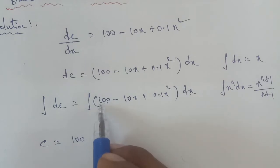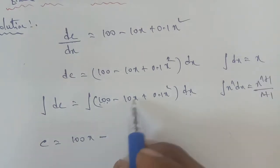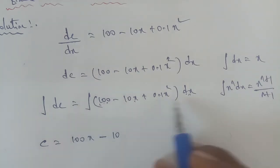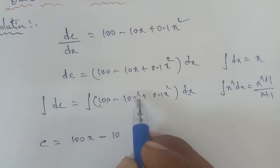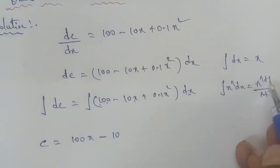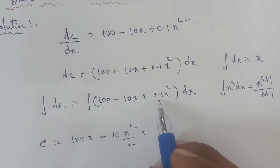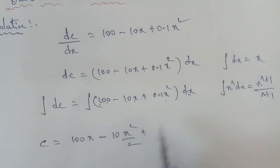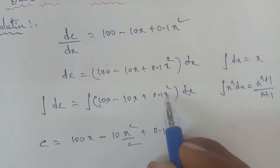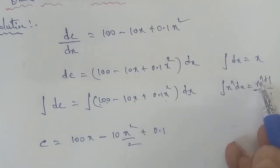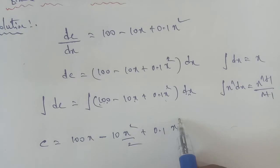The integral of 100 dx = 100x. For the term -10x: 10 is constant, so the integral of x dx = x²/2, giving -10 × x²/2 = -5x². For the term 0.1x²: the integral of x² dx = x^(2+1)/(2+1) = x³/3, giving 0.1 × x³/3.